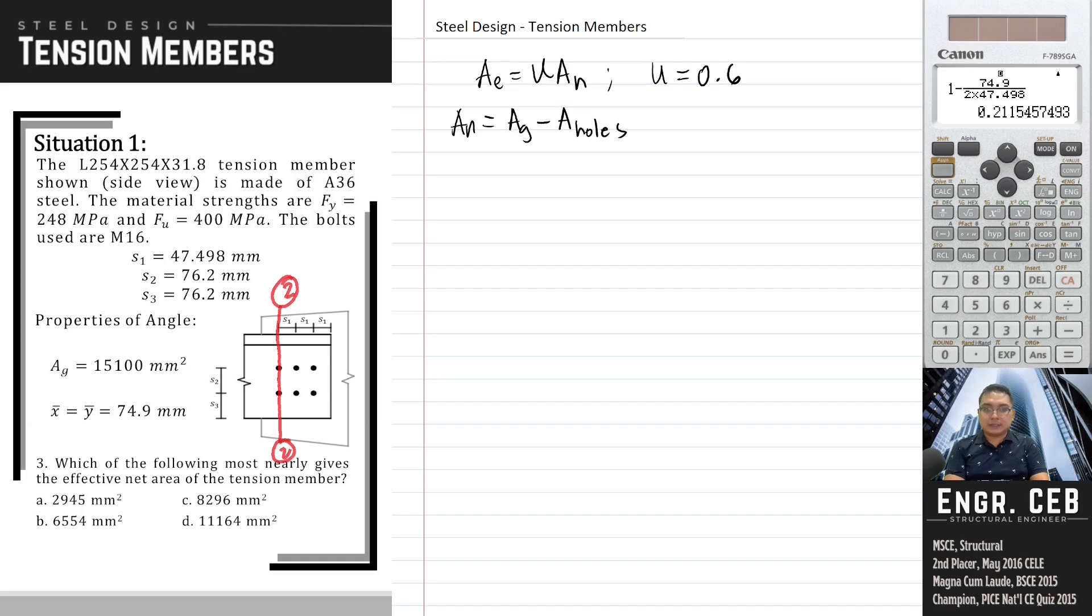In getting the net area, we will just subtract the area of the holes from the gross area. So for the net area, that is 15,100 minus we have two holes.